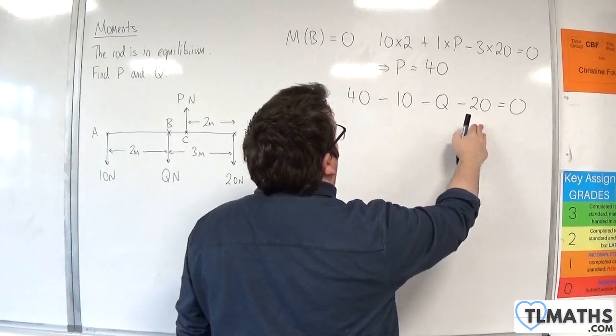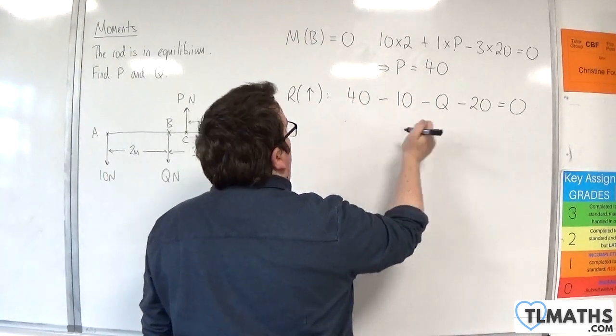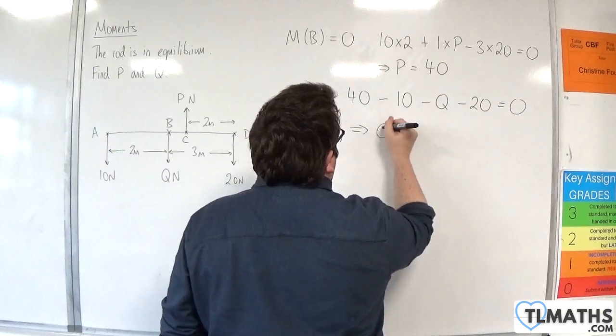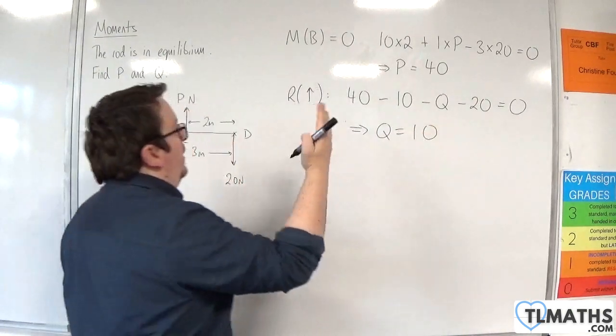So 40 take away 10, take away 20 is going to be 10, so that means that Q has to be 10. And so they are the missing values that we wanted to find.